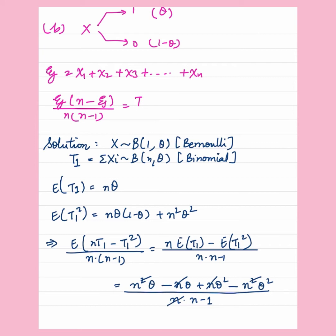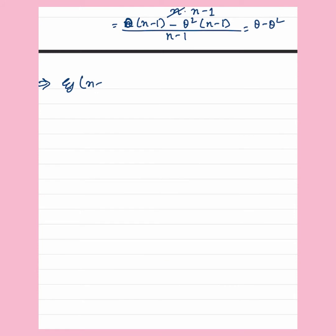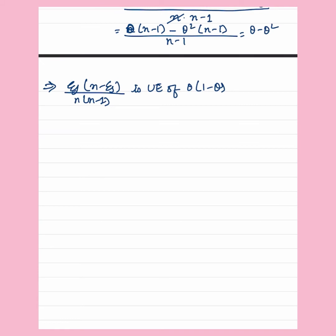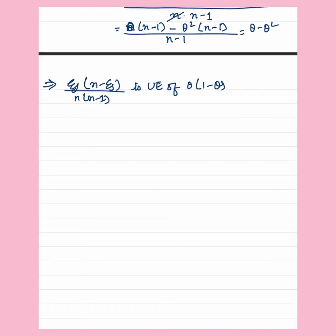I calculate the expected value of [n·T1 minus T1 squared] upon n times (n minus 1) and it is equal to theta times (1 minus theta). Hence it is an unbiased estimator of theta times (1 minus theta).